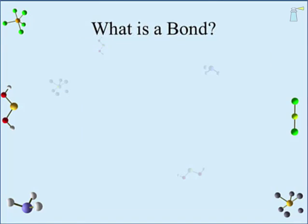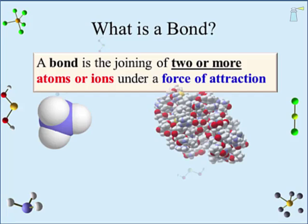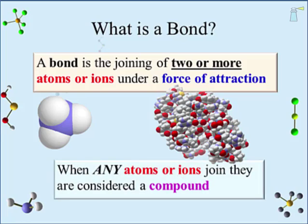So, what exactly is the bond? A bond is the joining of two or more atoms or ions under a force of attraction. Most bonds covered at this level of chemistry contain only a few atoms, but some compounds can have hundreds or thousands of chemical bonds. A compound is any atoms or ions that are joined together — it is a broad, inclusive term for joined particles.